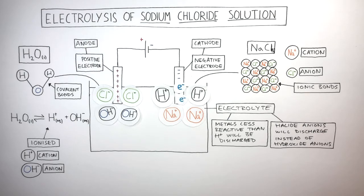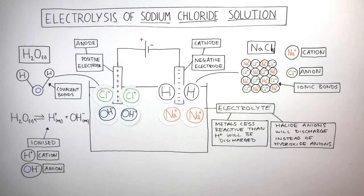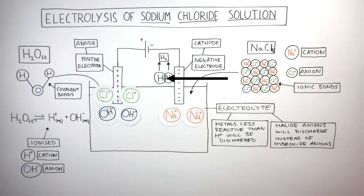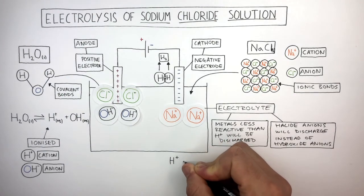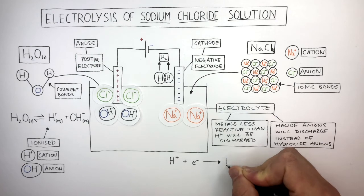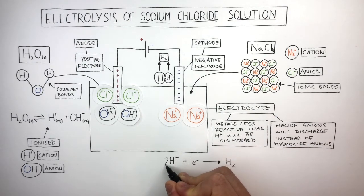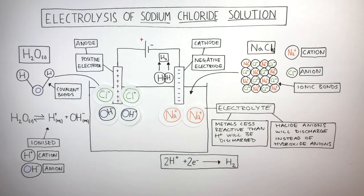At the cathode, the positive hydrogen cations each gain one electron, forming neutral hydrogen atoms. These hydrogen atoms are unstable as individual atoms since they do not have a full outer shell of electrons, so they form a covalent bond with each other to form a hydrogen molecule. Hydrogen gas forms and rises upwards. The half equation is: 2H⁺ + 2e⁻ → H₂.